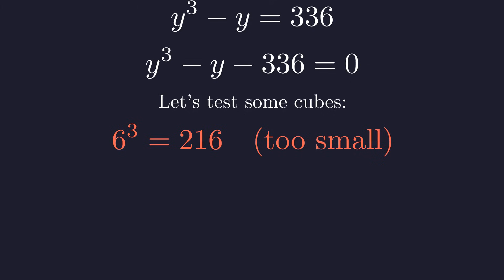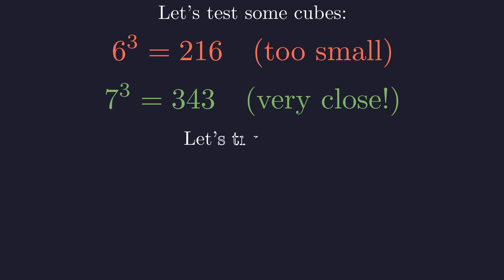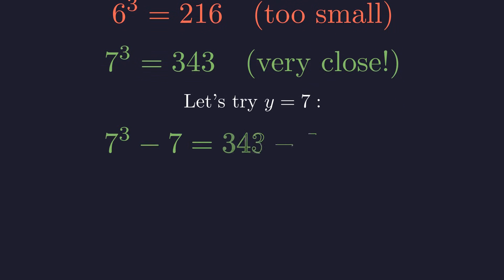6 cubed is 216, which is a bit too small. 7 cubed is 343. That looks very promising. So let's test if y equals 7 is actually a root of our equation. 7 cubed minus 7 is 343 minus 7, which is exactly 336. This confirms that y equals 7 is our solution.